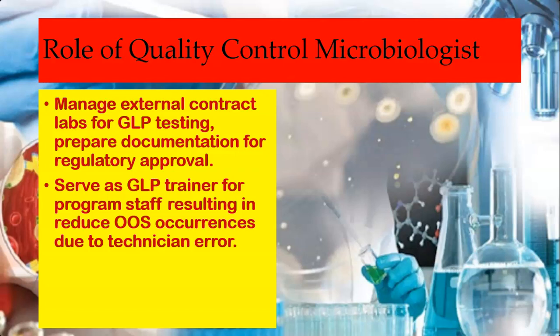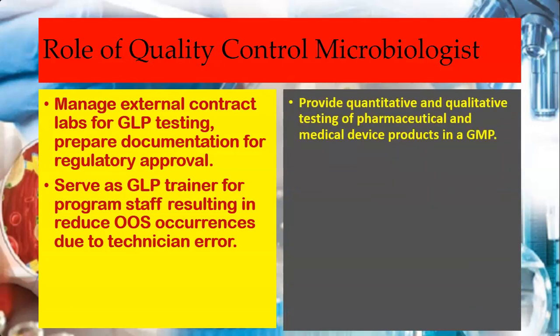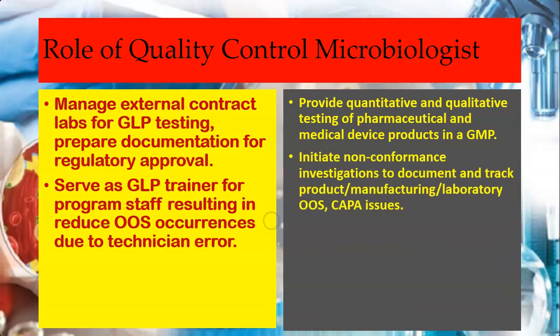OOS, or out-of-specifications, means the results of in-process or finished product testing which fall outside specified limits. If results obtained — whether in-process or in the product — are not according to the specified limits, the quality control microbiologist has to correct them. The next role of a quality control microbiologist is to provide quantitative and qualitative testing of pharmaceutical and medical device products in accordance with good manufacturing practices.